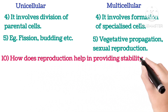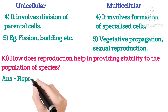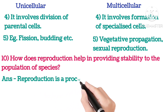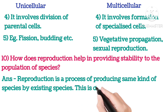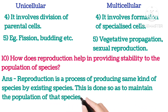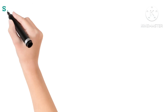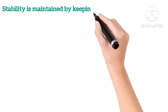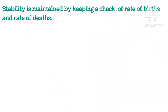Tenth: How does reproduction help in providing stability to the population of species? Reproduction is a process of producing the same kind of species by existing species, done to maintain the population and carry the species to the next generation. Stability is maintained by keeping a check on the rate of births and the rate of deaths.